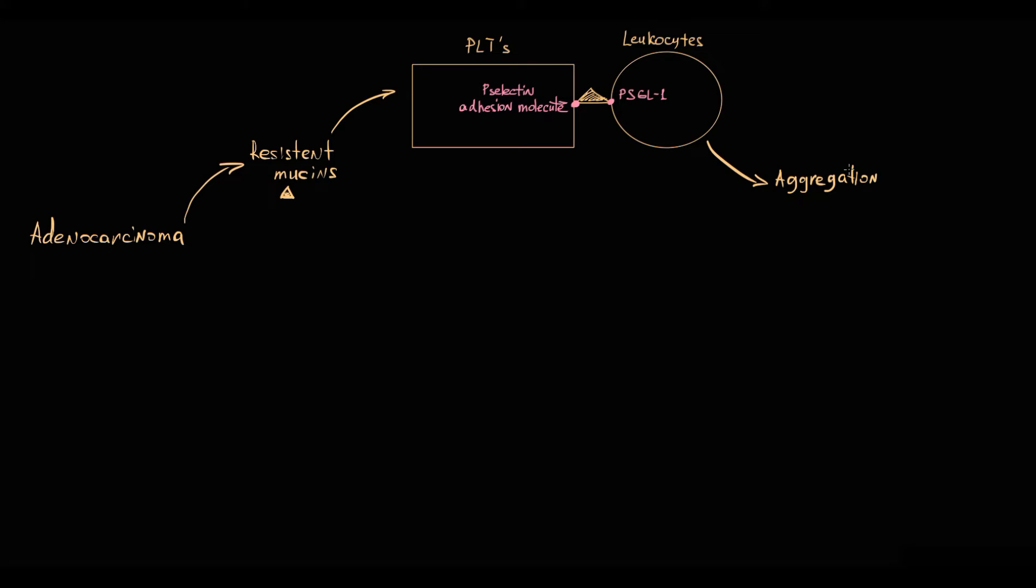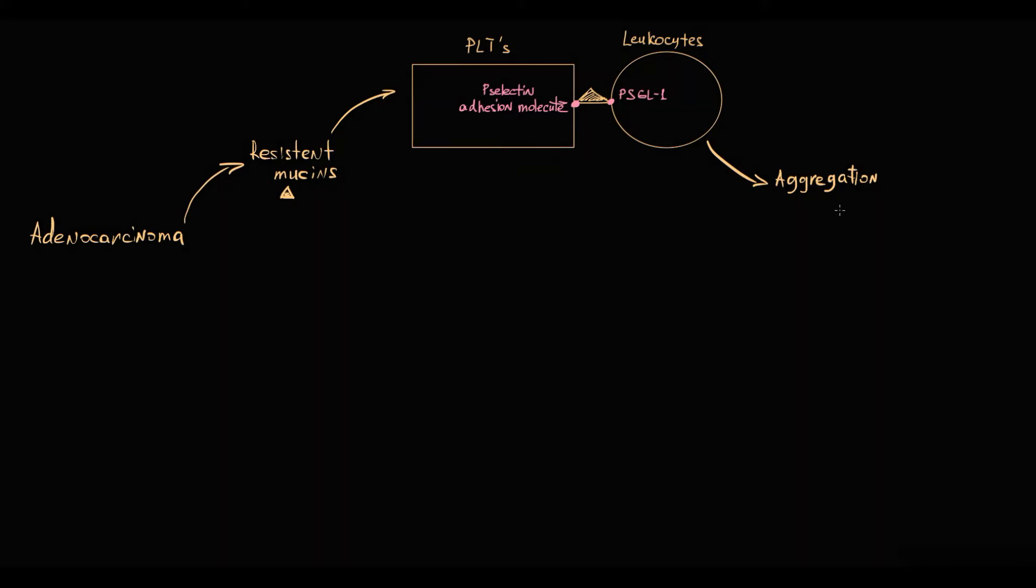And once leukocytes bind to platelets, they become activated and begin to produce proinflammatory cytokines that promote inflammation in the affected vessel. And also P-selectin binds to sulfatides on platelet surface, and by P-selectin molecules, platelets interact with each other and this provokes platelet aggregation, which is a major event in thrombus formation.